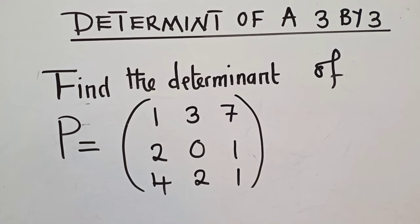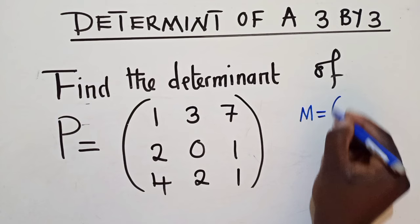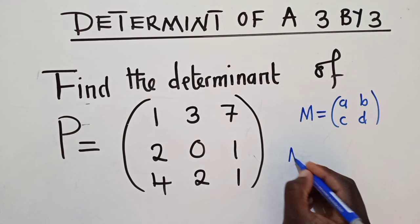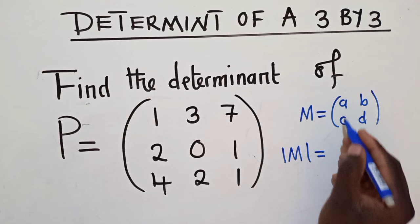Now how do we get to find the determinant of this matrix? Let me just give you an example of a 2 by 2 matrix. I know most of you know how to find the determinant of a 2 by 2 matrix. So let's say I've got matrix M, which is equal to A, B, C, and D. So if I say find the determinant of this matrix, you multiply the major diagonal. That is A times D, it's AD.